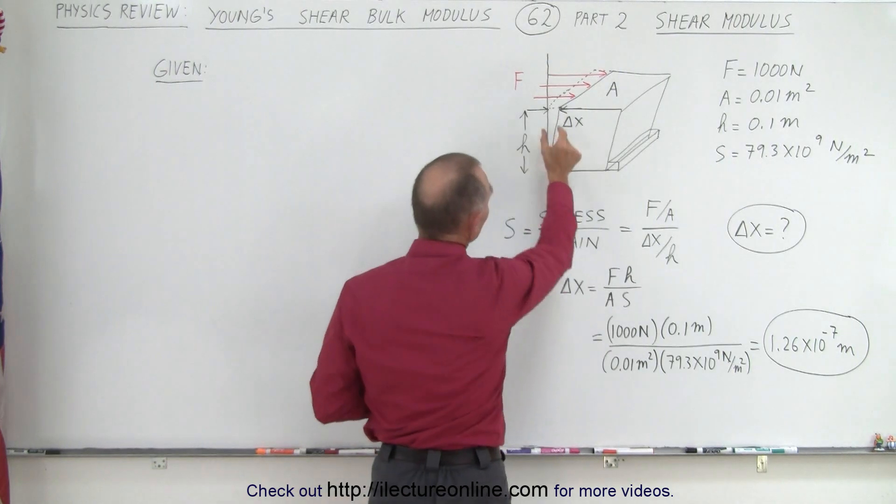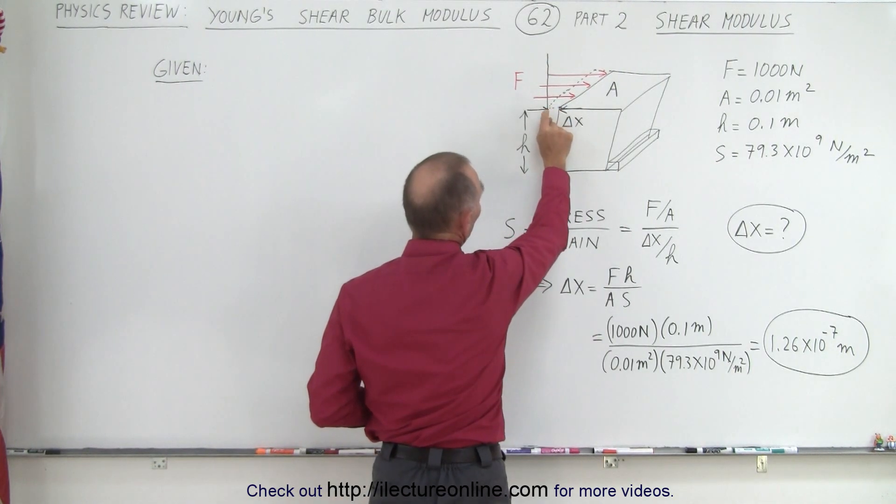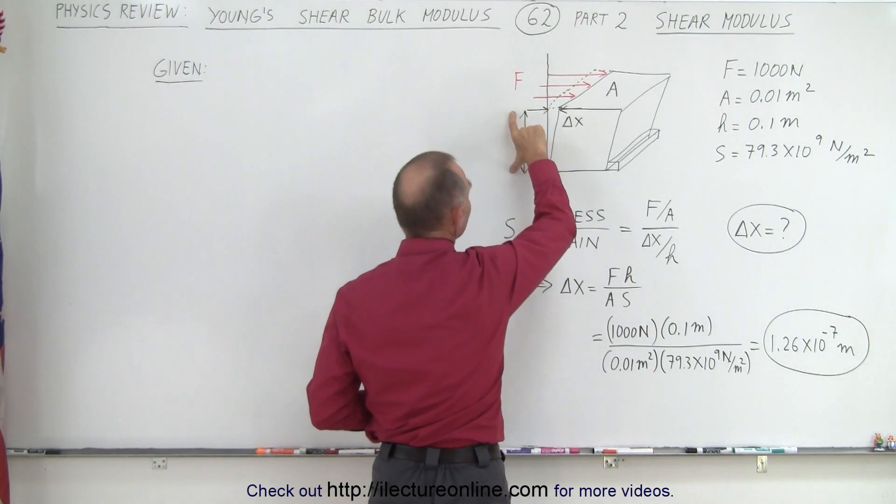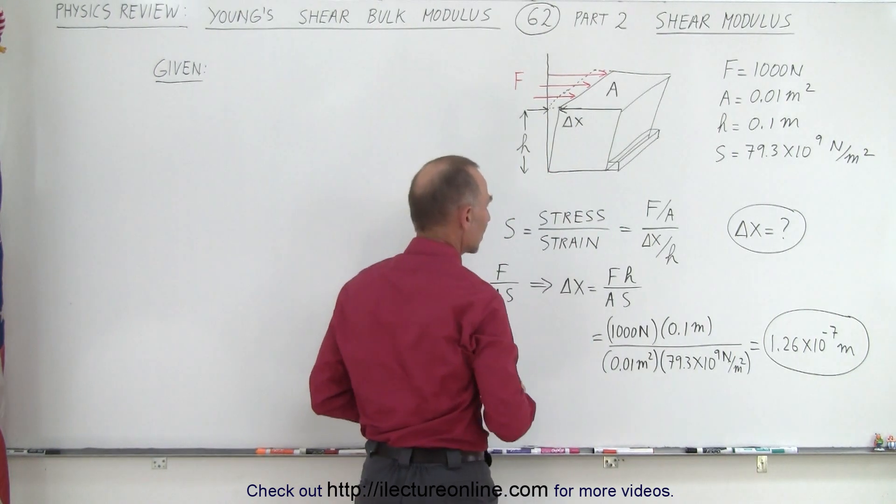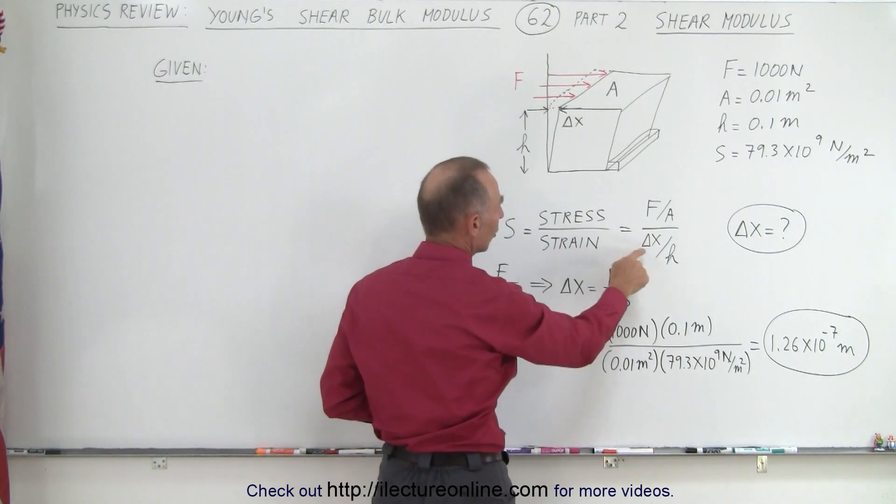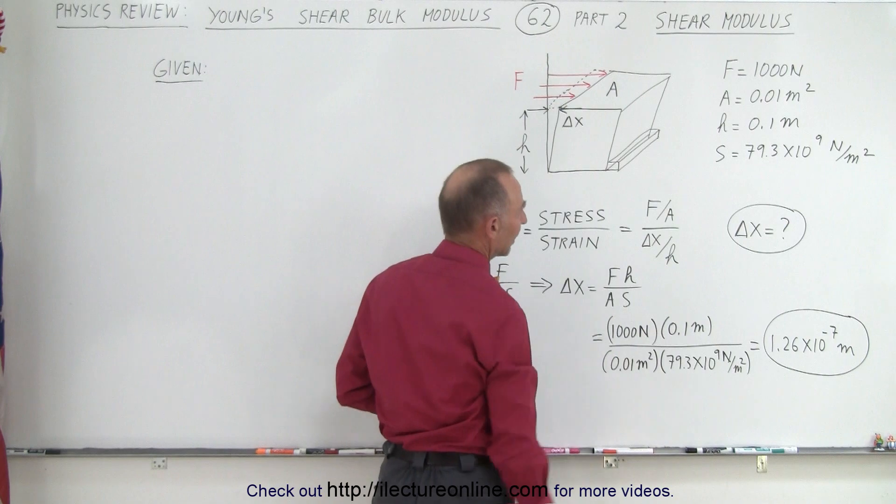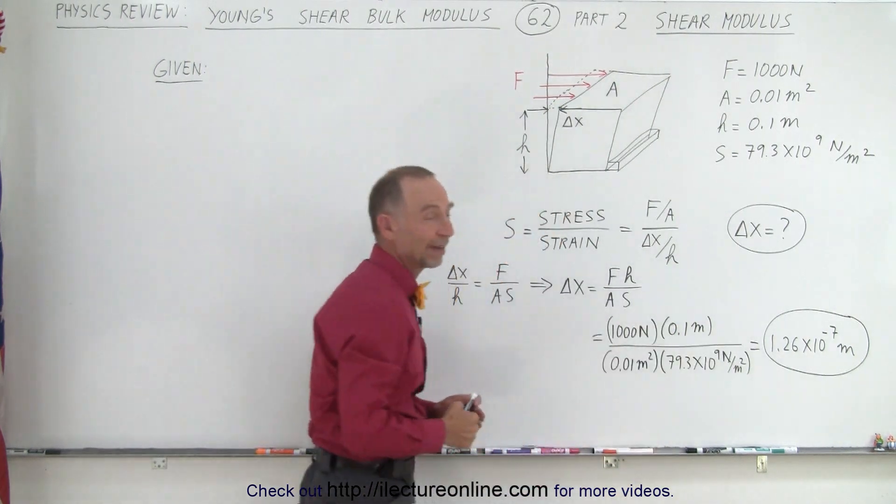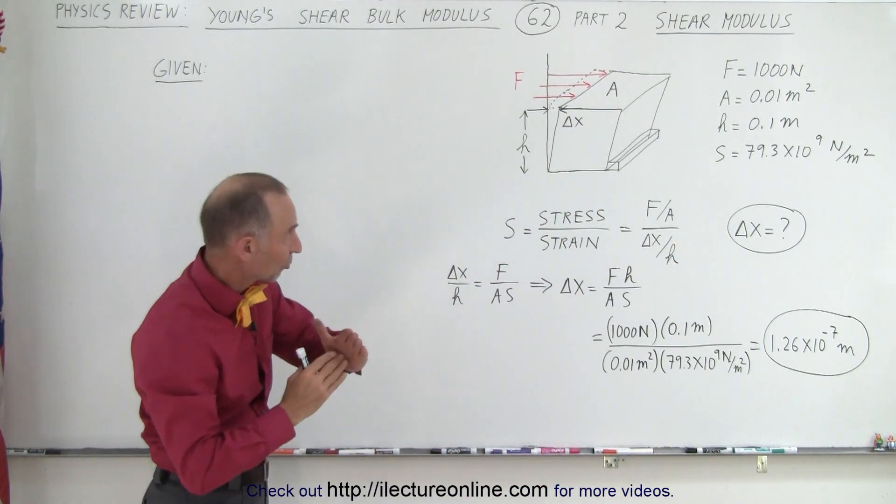Then we have the deformation which is the amount of distance the top moves to the right, and then we have the height of the object right here. The strain would be the ratio of that deformation divided by the height. And typically they want us to find that deformation, how much is it deformed.